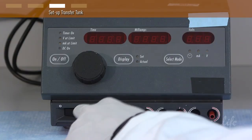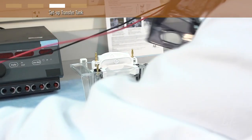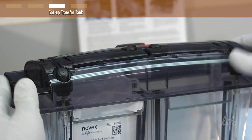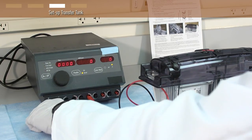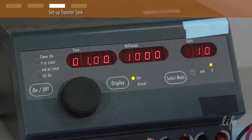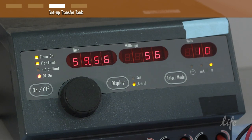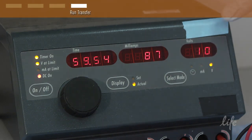Make sure the power supply is off. Place the cover on the tank and plug the power leads into the power supply. Turn the power supply on to begin the transfer. Transfer for 60 minutes at a constant 10 volts for nitrocellulose membranes and at 20 volts for PVDF membranes.